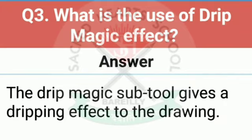Question number three: what is the use of drip magic effect? The answer is, the drip magic sub tool gives a dripping effect to the drawing. Dripping effect means humne jo bhi usmein color kiya hai, usko thoda sa drip kar deta hai, means thoda sa phaila deta hai. Jis se wet colors hote hain, water colors thoda sa wet hote hain, us tarah ka effect humari painting ko de deta hai.